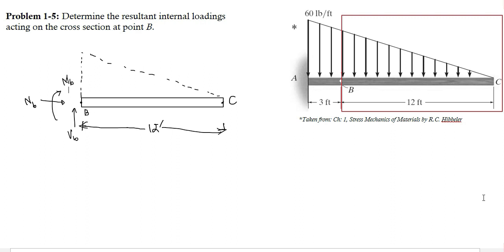The uniformly variable load is varying from 0 at point C to 60 pounds per foot at point A in a span of 15 feet. It means uniformly variable load is varying at a rate of 4 pounds per foot.